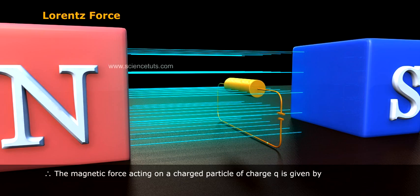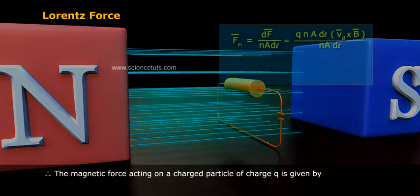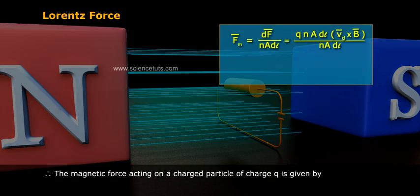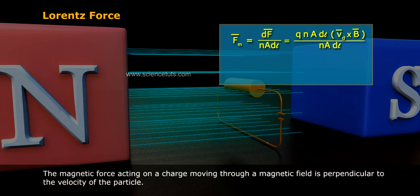Therefore the magnetic force acting on a charged particle of charge q is given by F_m equals dF divided by n A dL, which equals q n A dL times v_d cross B divided by n A dL.